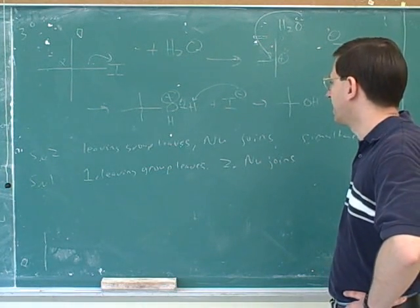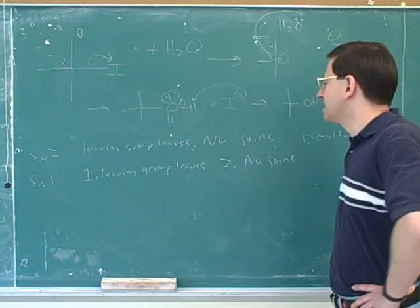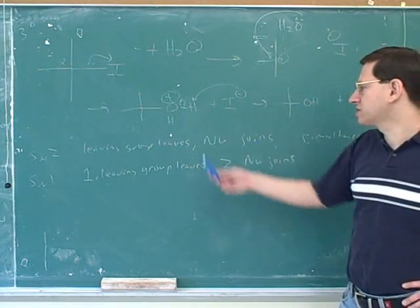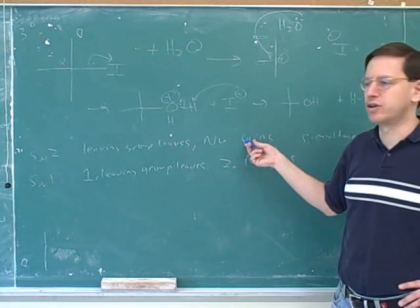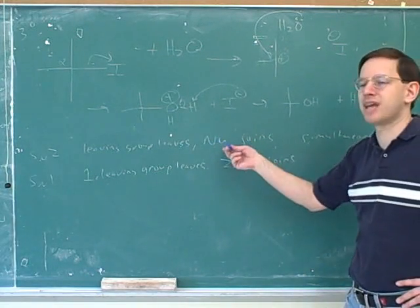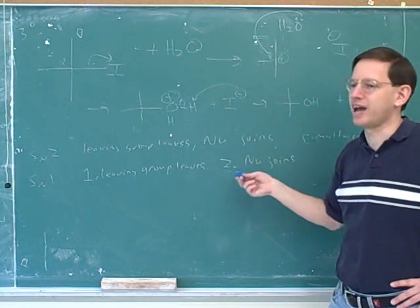So, I would just draw that like this. And it's useful to have slogans for what happens in these reactions. Well, in both of these reactions, the leaving group leaves and the nucleophile joins. Same exact thing in both reactions. The only difference is, in SN2, they happen simultaneously. And in SN1, they happen sequentially.